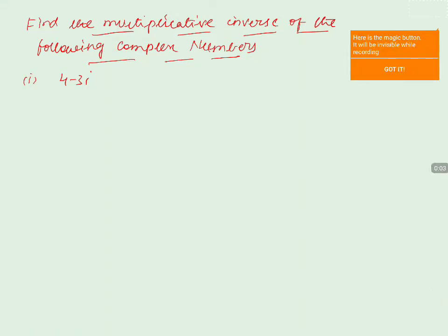Find the multiplicative inverse of the following complex number. The very first one is 4 minus 3i.